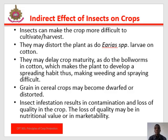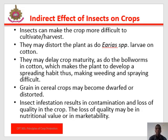The indirect effects of insects on crops: Insects may cause problems for crops indirectly by making the crop difficult to cultivate. They may distort the plants and delay crop maturities. Grains in cereal crops may become dwarf and distorted. Insect infestation results in contamination and loss of quality in the crops — the loss of quality may be in nutritional value or in marketability.